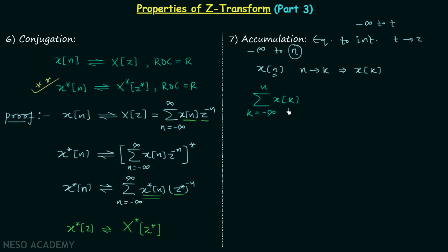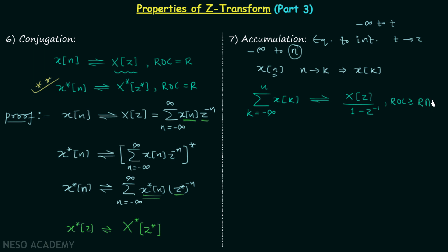This summation is what we mean by accumulation. If we have a signal xn with Z-transform Xz, then after accumulation the Z-transform equals Xz divided by (1 - Z⁻¹). If the ROC of xn is R, then after accumulation the new ROC is greater than or equal to R intersected with the region where |Z| > 1.